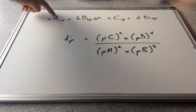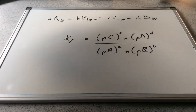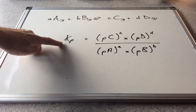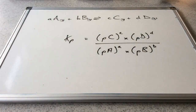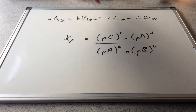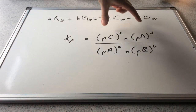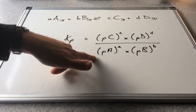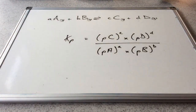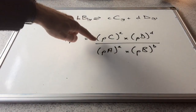So if we've got A moles of A, B moles of B in equilibrium with C moles of C and D moles of D, then the Kp expression would look like this. The lowercase letters are the balancing numbers and they've been raised to powers. We've got the products on the top, the reactants on the bottom, just like with Kc, but instead of square brackets — which are used for moles per decimetre cubed concentrations — we've got round brackets.